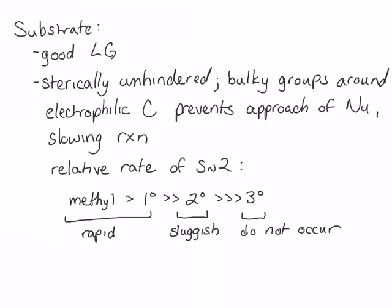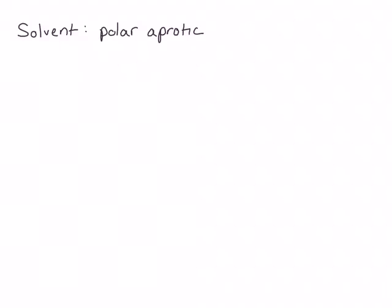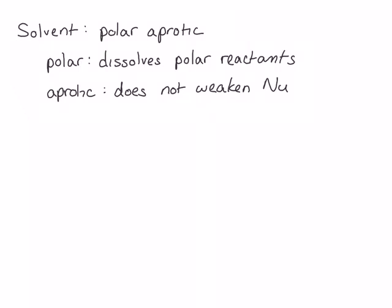Finally, the solvent that most favors an SN2 mechanism is a polar aprotic solvent. Polar aprotic solvents are capable of solubilizing the reactants in an SN2 reaction. The fact that these solvents are aprotic prevents the weakening of the nucleophile that would occur in a polar protic solvent. Remember that weakening the nucleophile would cause the reaction to slow if it were undergoing an SN2 mechanism.